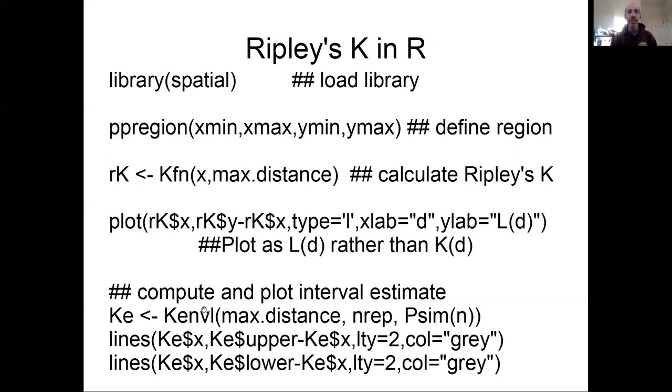And then I'm going to need to compute those bootstrapped interval estimates. And that's handled primarily by two functions. First, this Psim function that actually simulates random maps. And then this K envelope function that does the interval estimation. It calculates the confidence intervals from these bootstrapped maps. And we tell the number of points that we need to simulate and the number of replicates. And the K envelope will call that point simulation function multiple times and give us those envelopes.